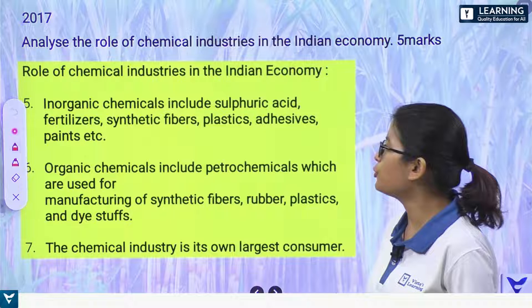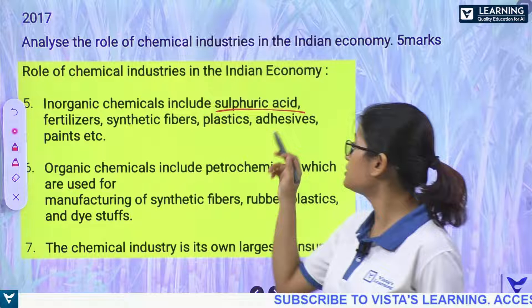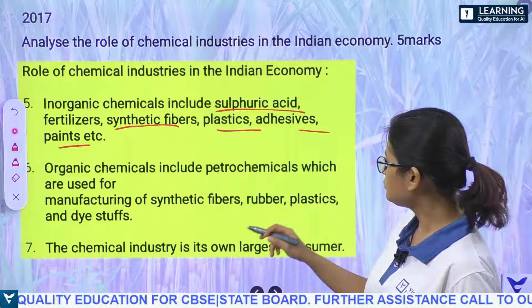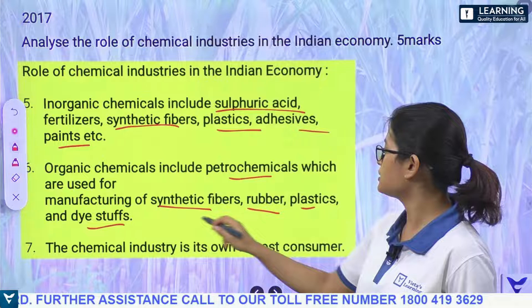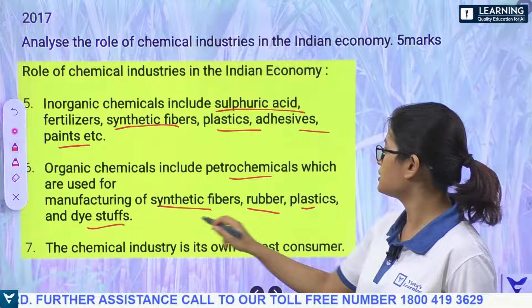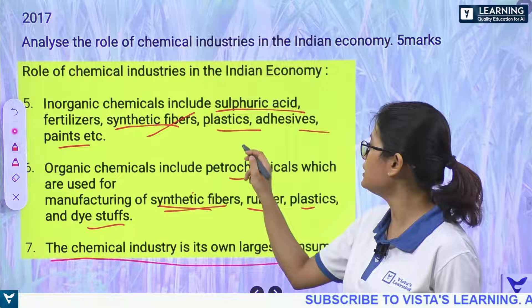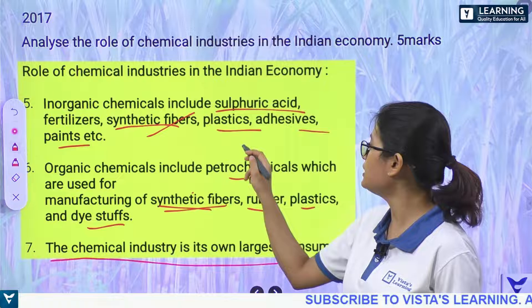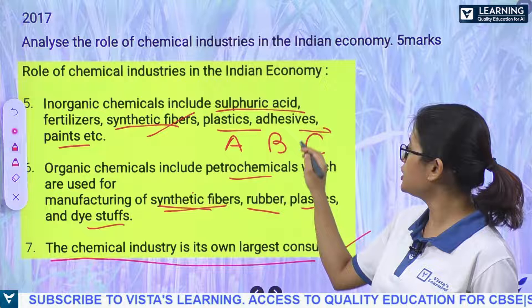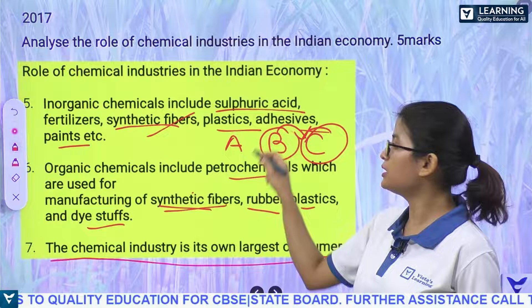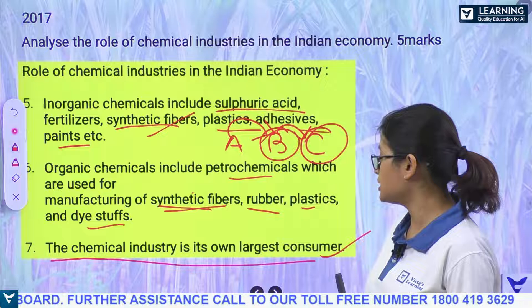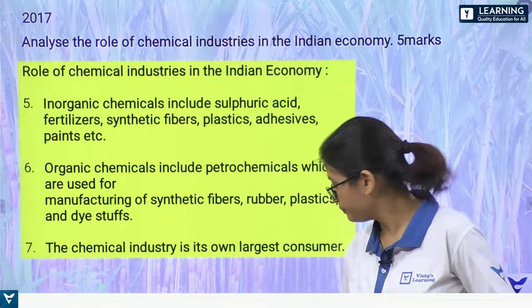The chemical industry is its own largest consumer. For example, to produce chemical C it needs chemical B, and to produce chemical B it needs chemical A — so the chemical industry consumes its own outputs as inputs. I hope the role of chemical industry in increasing India's economy is clear. For five marks, write five to six points with a word limit under 120 words.